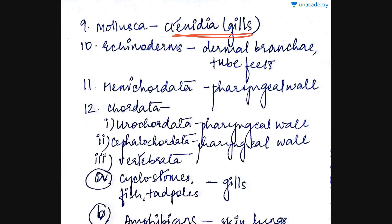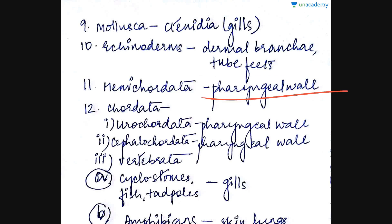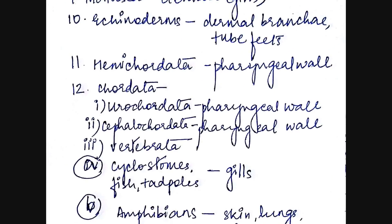Coming to echinodermata, for example the starfish, they respire through dermal branchiae or the tube feet — the tube feet is the major respiratory organ in their case. Now coming to hemichordata, for example balanoglossus, which respires through the pharyngeal wall. Within the chordates, the urochordata, for example herdmania, also respires through the pharyngeal wall.